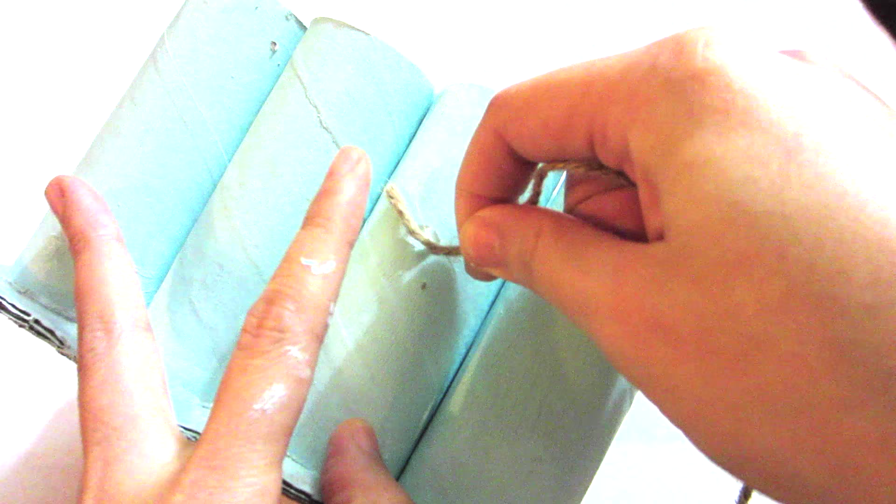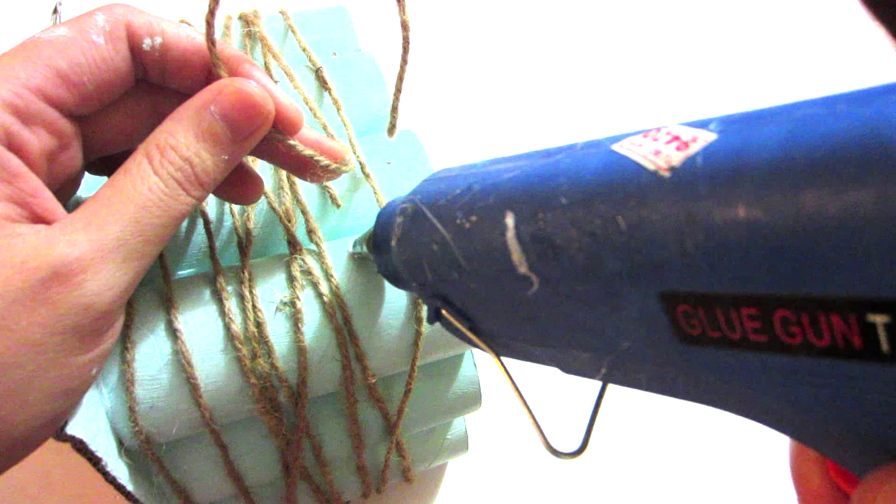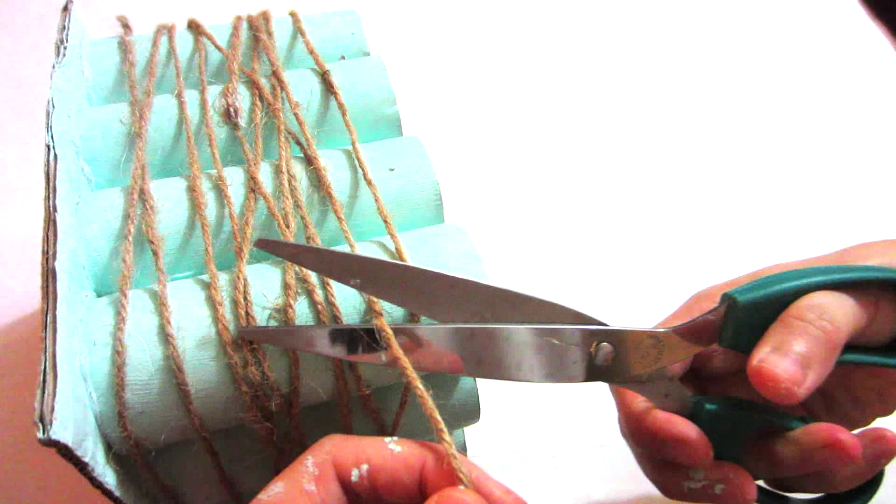The next step is to take some twine, hot glue one end down, then wrap it around the pencil holder 10 times like I'm doing here. Hot glue the other end down, then trim off the excess.